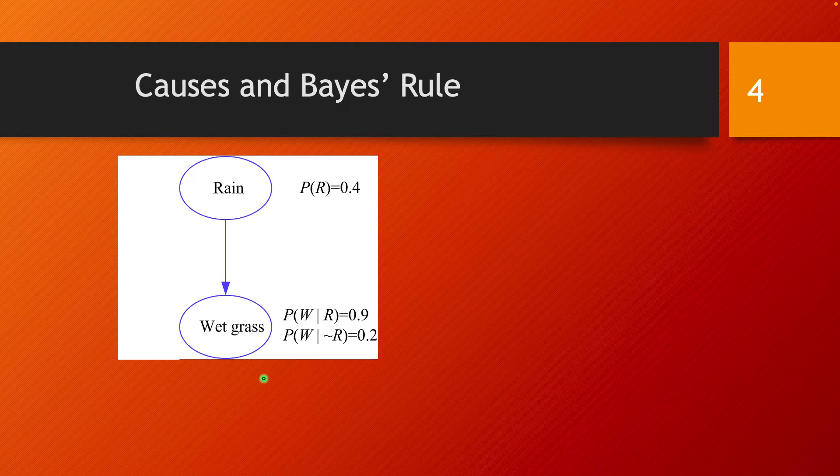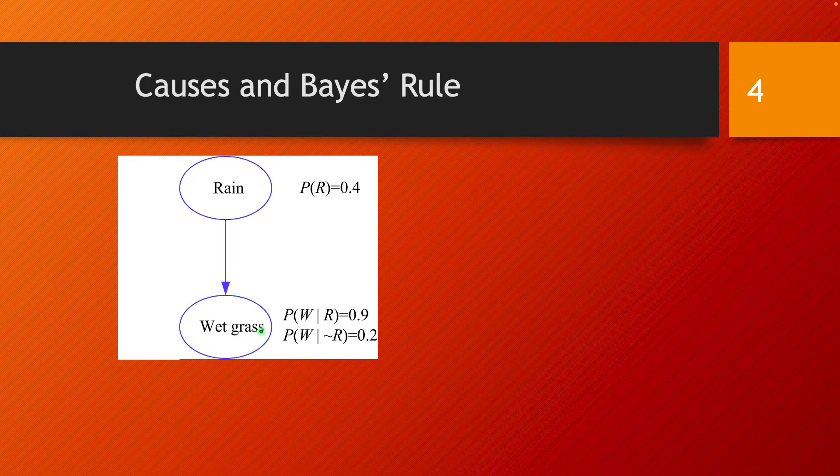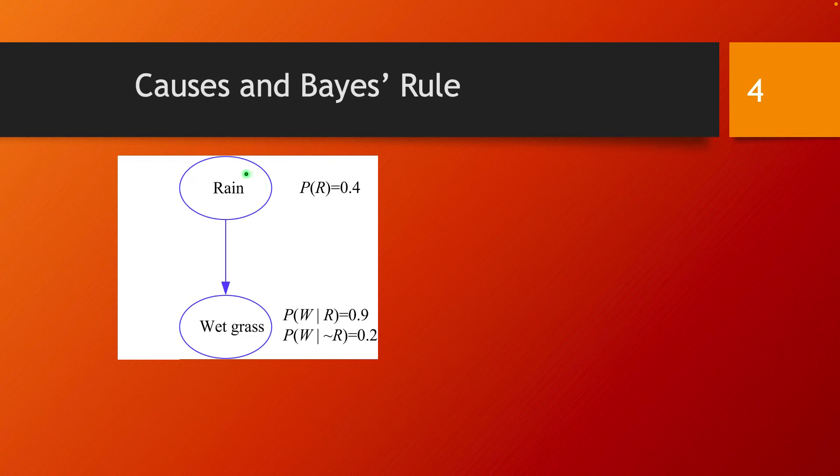Let's give an example. We want to reason around the chances of the grass in our yard getting wet. We know in this model that rain is going to cause the grass to get wet. We have one node for rain and one node for the grass getting wet.